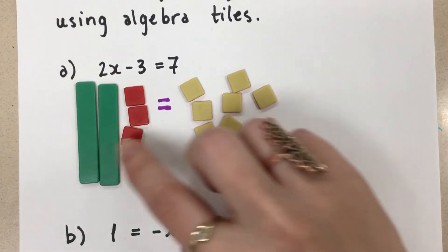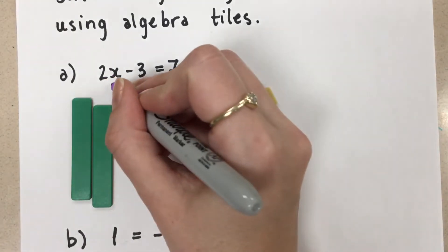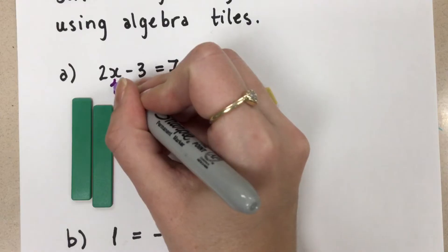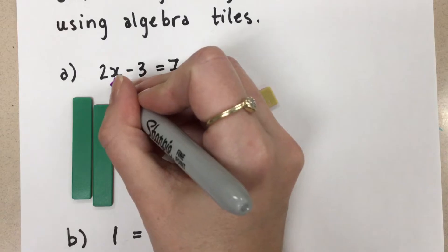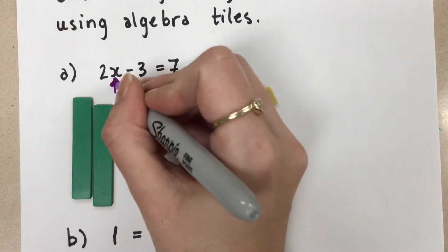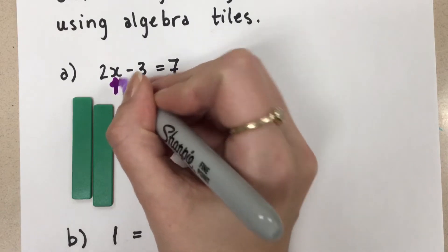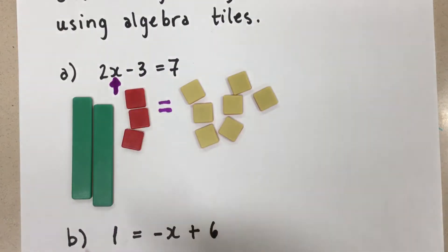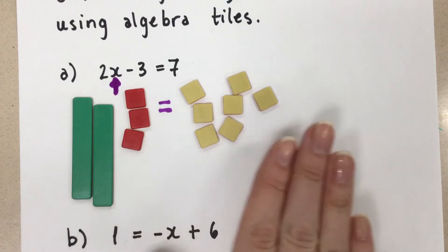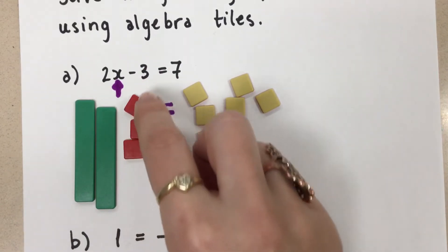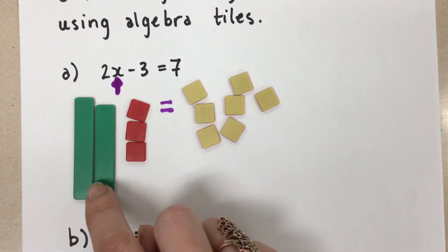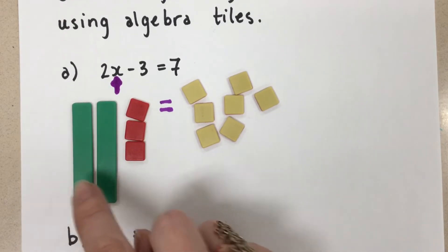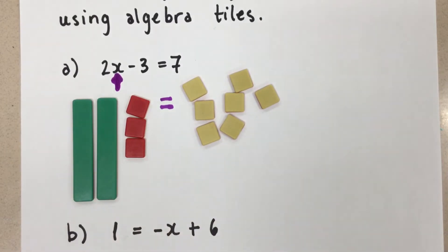The goal to solve an equation is always to get the value of the variable — we want to know what x is to make this equation true. In order to do that, we want to always get the x by itself, which means to isolate the variable. Right now we have this negative 3 on this side of the equation, which is preventing the x's from being by themselves. We want them to be alone on one side of the equal sign.